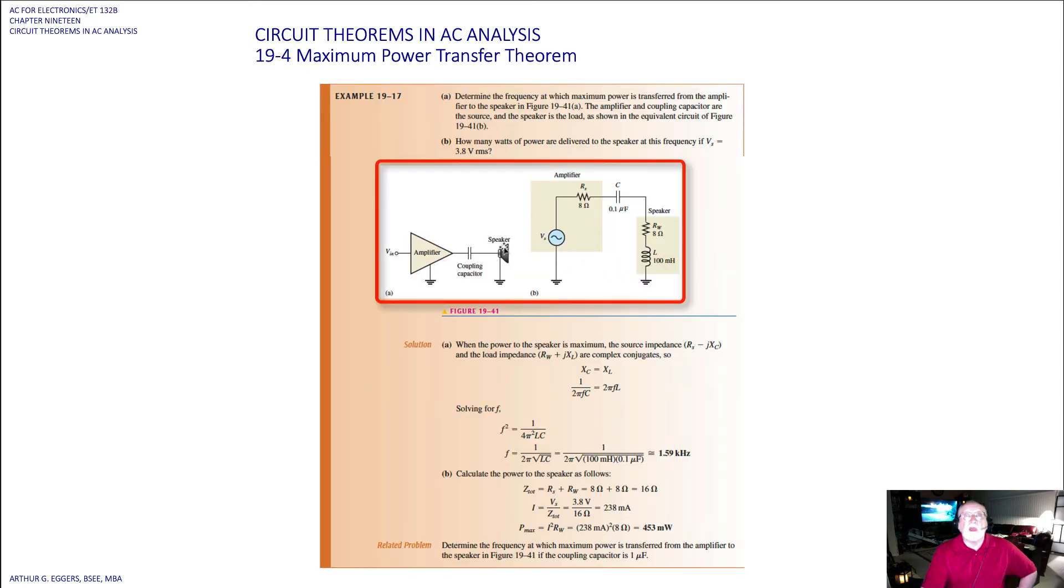In the next one, we actually put in a speaker. We've got an amplifier, coupling capacitor, and speaker. You can see over here in the block diagram it's modeled as the winding resistance and the coil in the speaker L. We've got a resistance in the load, V source. They want us to determine the frequency at which maximum power is transferred and how many watts of power are delivered.